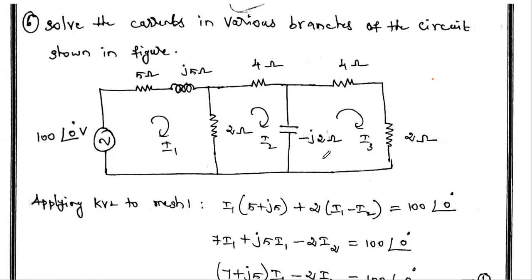We have already solved six problems using mesh analysis. The difference between those previous problems and this one is that all previous solved problems consisted of only resistance R with a DC power supply or DC current source.